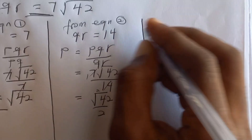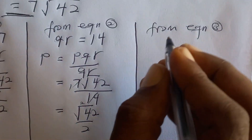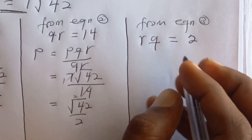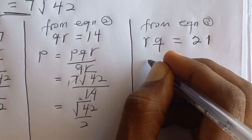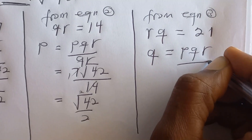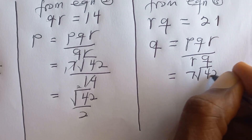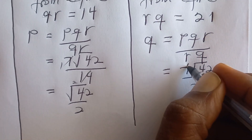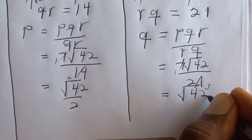From equation 3, we have PR equal to 21, so Q equals PQR divided by PR, which is 7 square root of 42 divided by 21. Simplifying, 7 over 21 gives one third, so Q equals square root of 42 over 3.